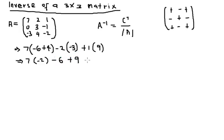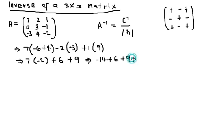Solving this: minus six plus four is minus two, then minus two multiplied by seven is minus fourteen. For the next term: minus six plus nine is plus three. Combining everything: minus fourteen plus six gives minus eight... and this works out so that the determinant of this matrix is 1. Since the determinant is 1, this will be in the denominator.